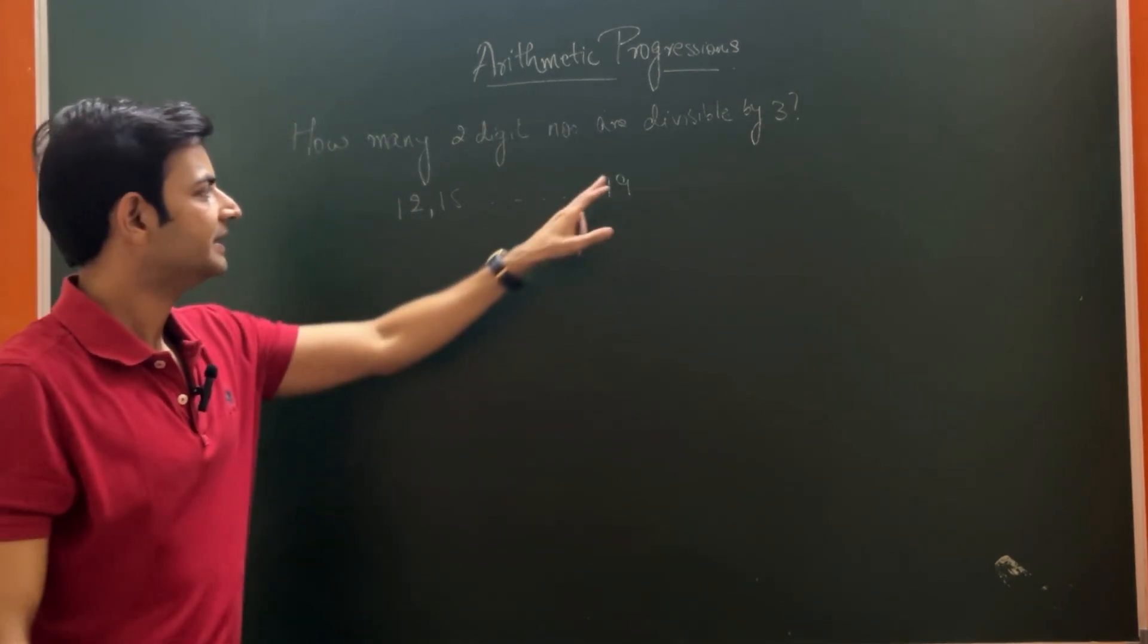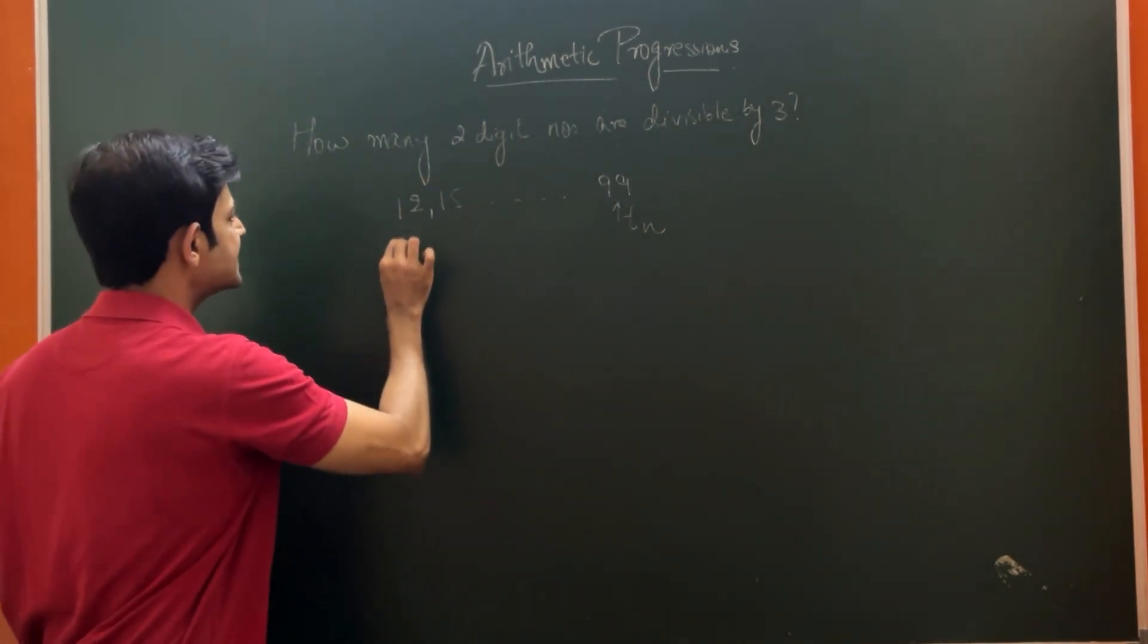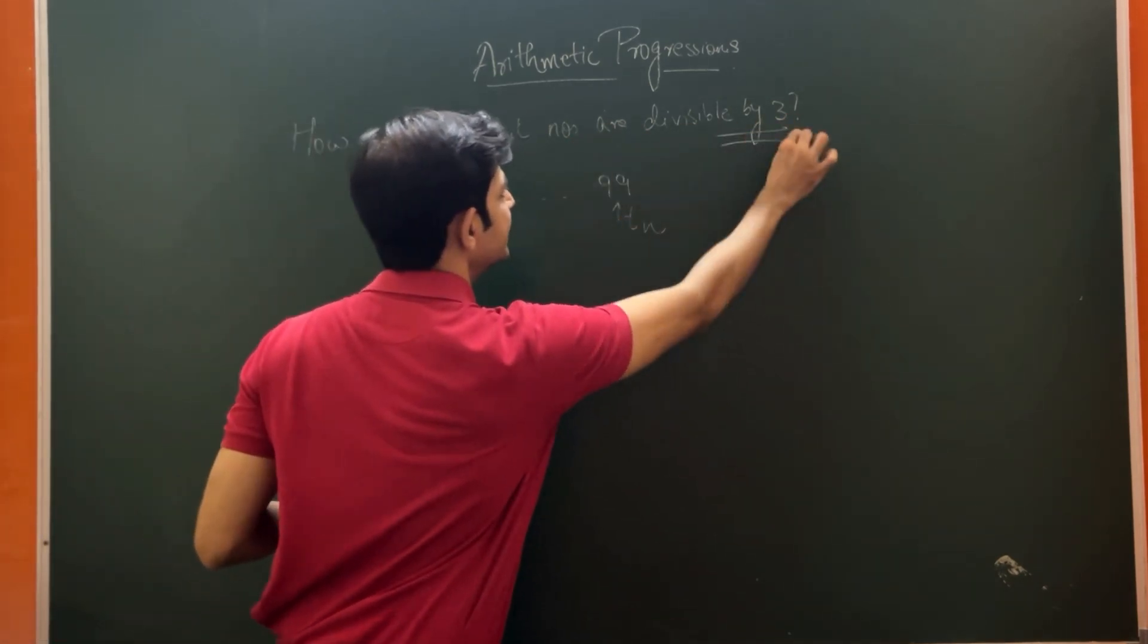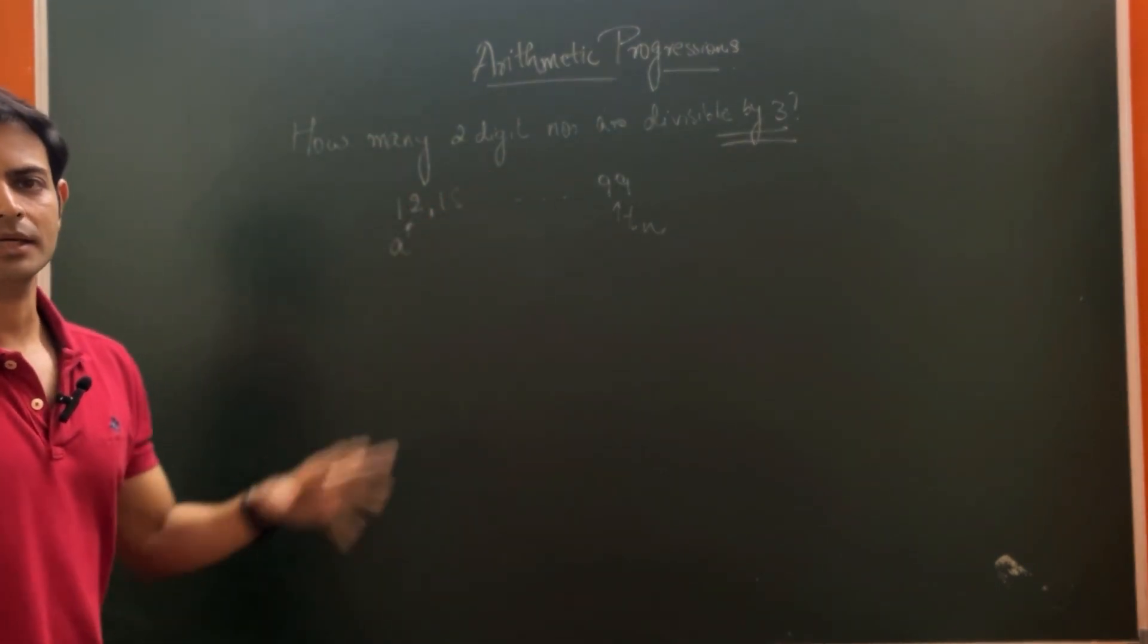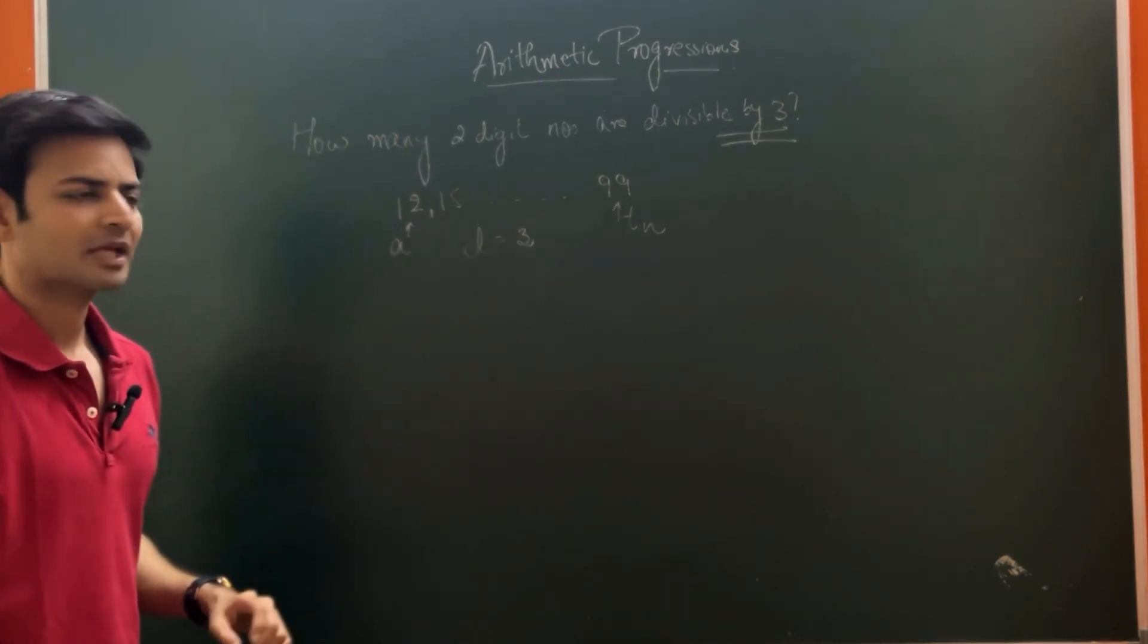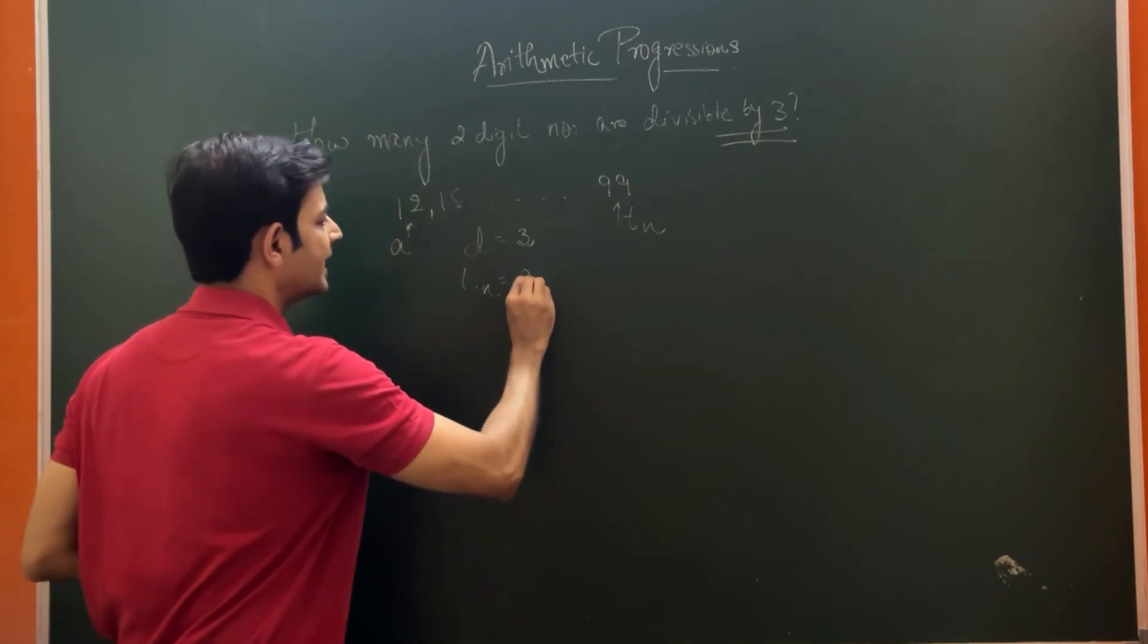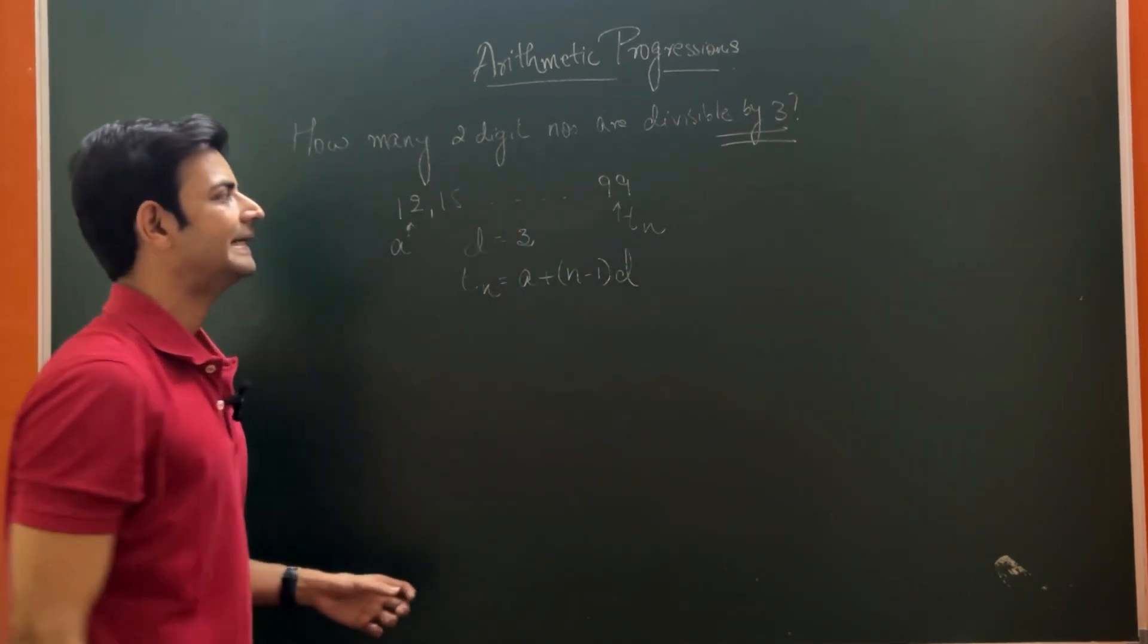99 here is my TN. A is my 12, and because we are supposed to find numbers divisible by 3, they will be in a sequence with 3. Here the common difference will be equal to 3. We will apply the formula.